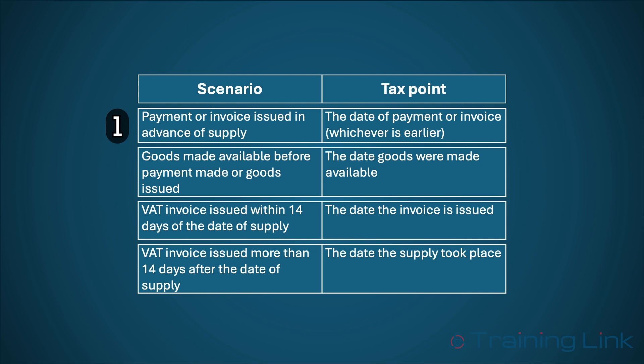Let's now say that the goods or services were made available before payment was made or the invoice was issued. The date that the goods or services were made available would be your tax point. However, if the invoice is issued or payment is made within 14 days of the goods or services being made available, then this would become your new tax point. If this happens after 14 days, then the date that the goods or services were made available — i.e. the basic tax point — would remain as is.